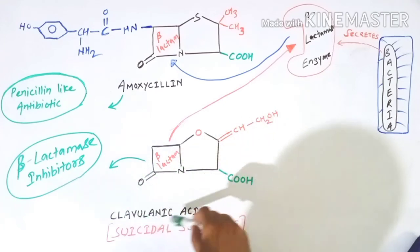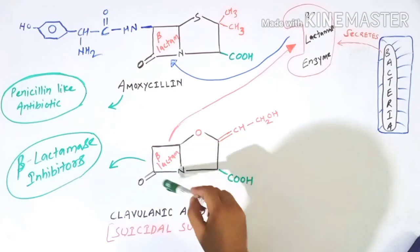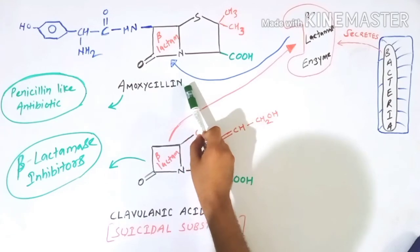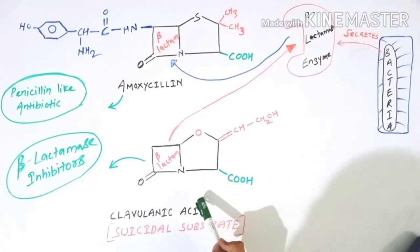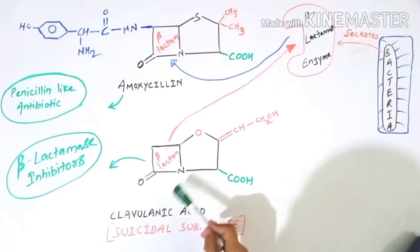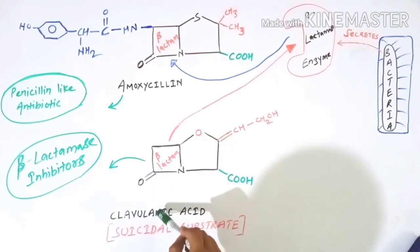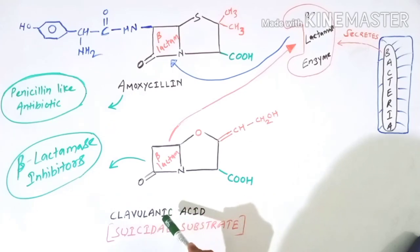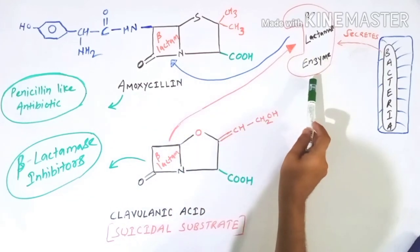Thus, clavulanic acid sacrifices its own life to safeguard the amoxicillin molecule from attack by the beta-lactamase enzyme. That is why clavulanic acid is also known by the name suicidal substrate. Clavulanic acid is added to amoxicillin as a suicidal substrate to safeguard amoxicillin from attack by this enzyme.